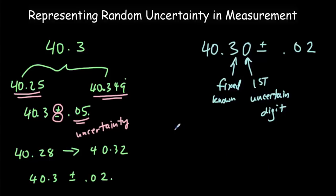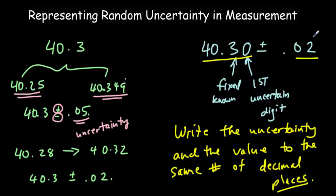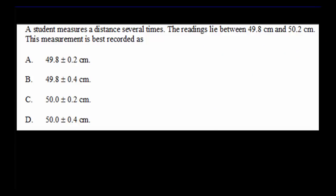And we really should write a 0 in there because that's our first uncertain digit. So as a general rule, what we want to do is write the uncertainty and the value to the same number of decimal places. So if I have two decimal places in my uncertainty, I should have two decimal places in my value.